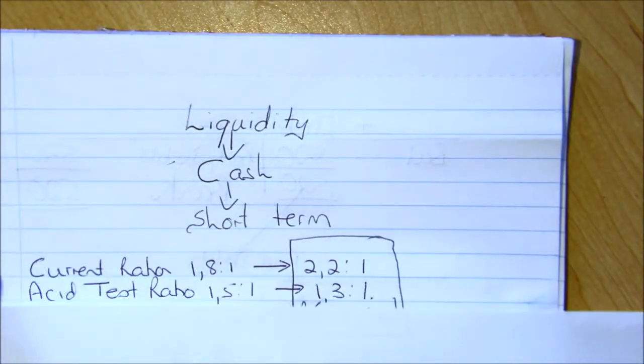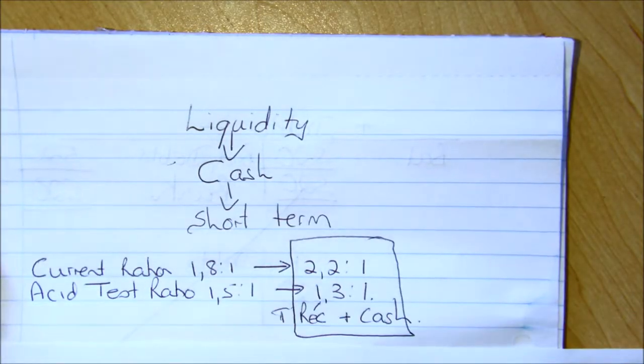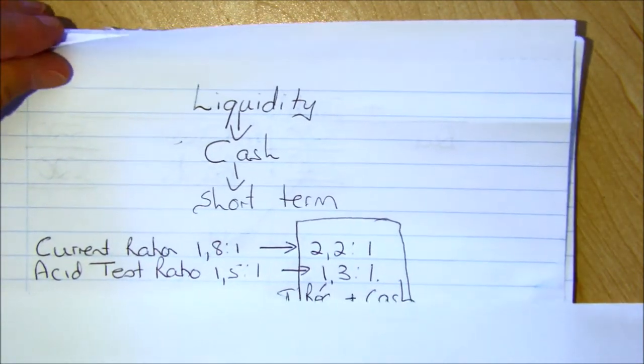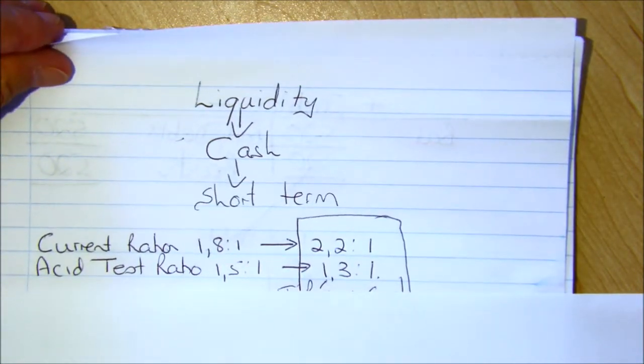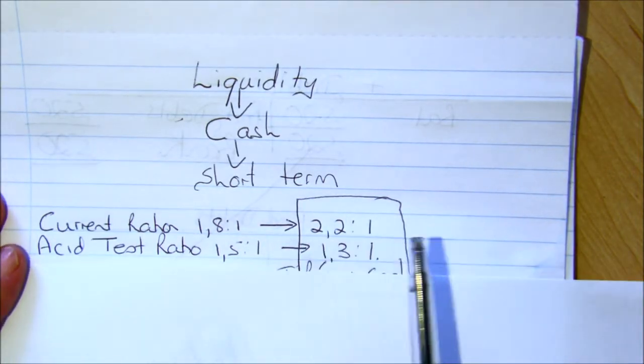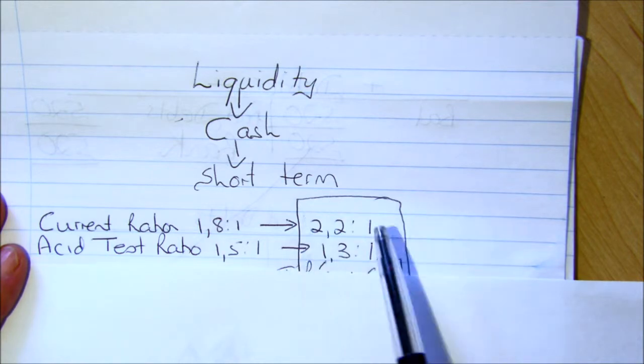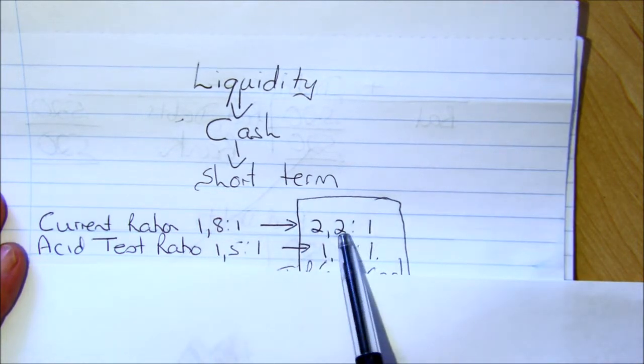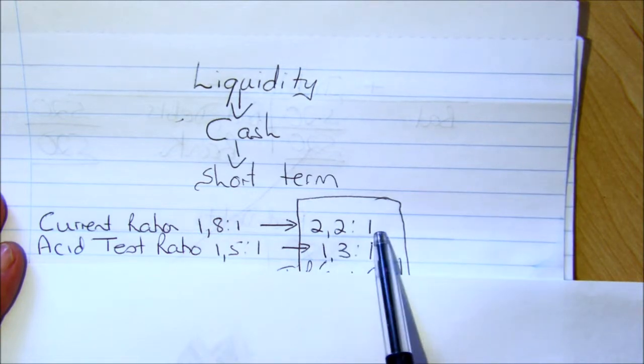If we look at this current ratio and the acid test ratio, the current ratio, if we compare it from last year to this year, has actually increased from 1.8 to 2.2. What that means is that in the current year, for every 1 Rand you owe, you've got 2.20 in current assets, which is enough to cover your debts, obviously.